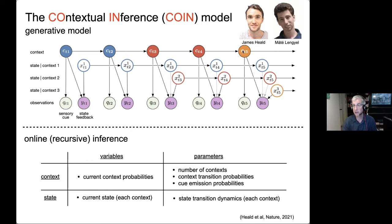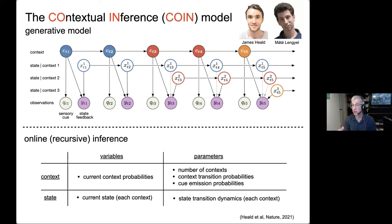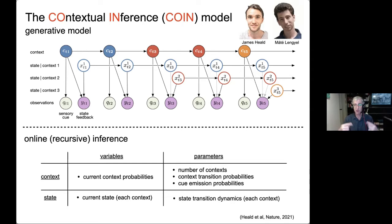We can break things into variables you want to estimate and parameters. Variables are things that change — like which context is currently active (blue, red, or orange) and what's the current state of each context. Parameters are things the model thinks are fixed: how many contexts have I seen, what determines context transition probabilities, what determines the Q emission, and what are the state transition dynamics. Your beliefs about parameters will change over time, but in the generative model they're fixed numbers. Once we have the generative model and the priors, that fully specifies the model and the inference process.